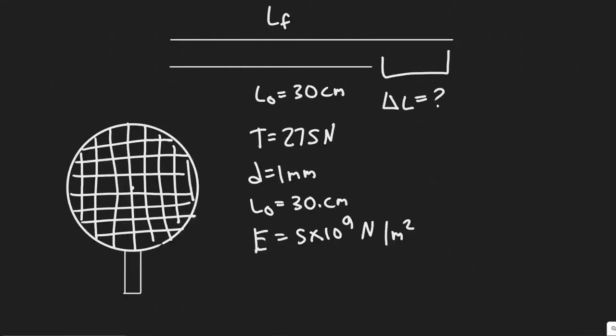So in this problem, we're told a nylon string on a tennis racket is under a tension of 275 newtons. If its diameter is 1 millimeter, by how much is it lengthened from its un-tensioned length of 30 centimeters?